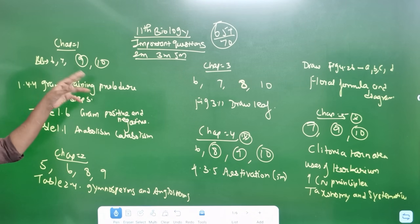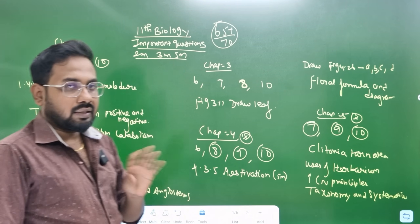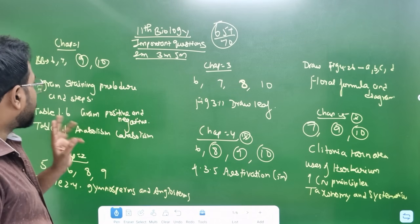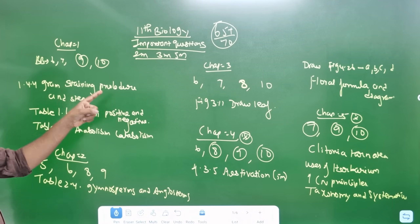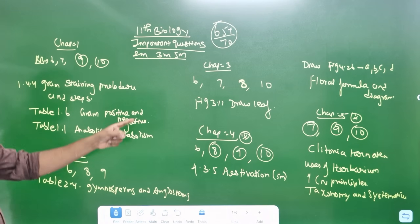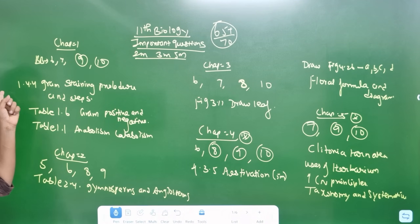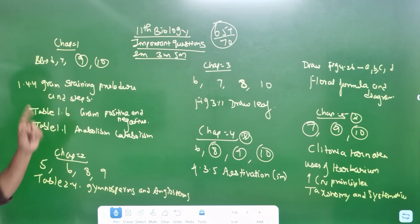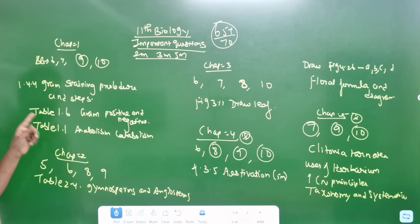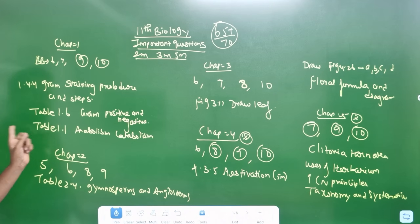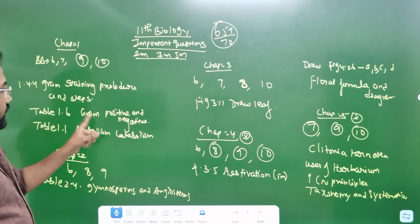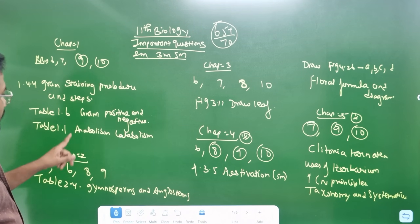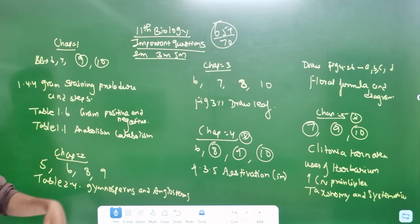Chapters 6, 7, 11. The details of your 5-mark — the book will show. Questions 1, 4, 4, 5 — gram staining. This question is well. The present question is paragraph number, table number 1.6 — the difference between tables. If you look at the book, you will see the gram positive and gram negative. Anabolism and catabolism.